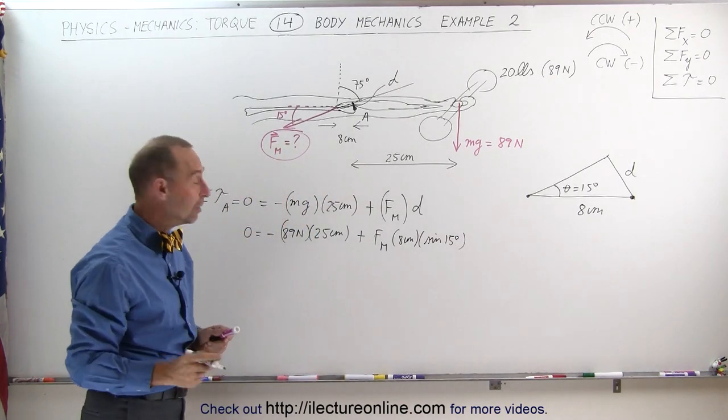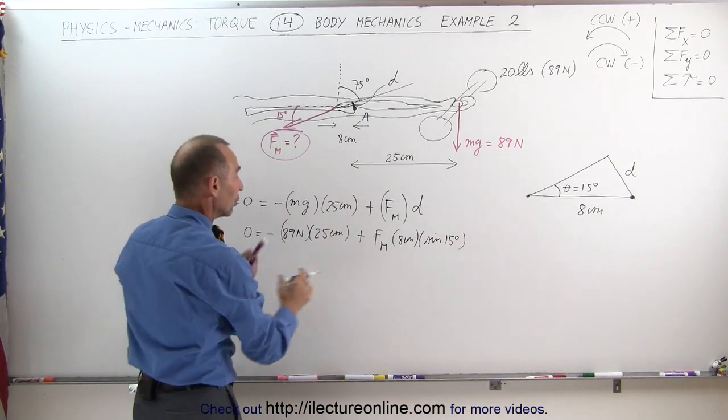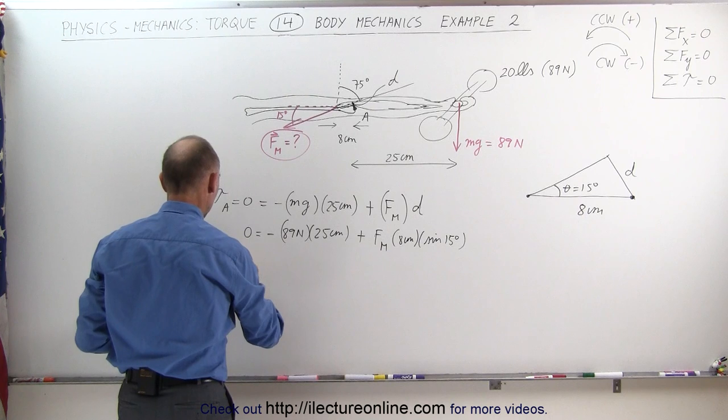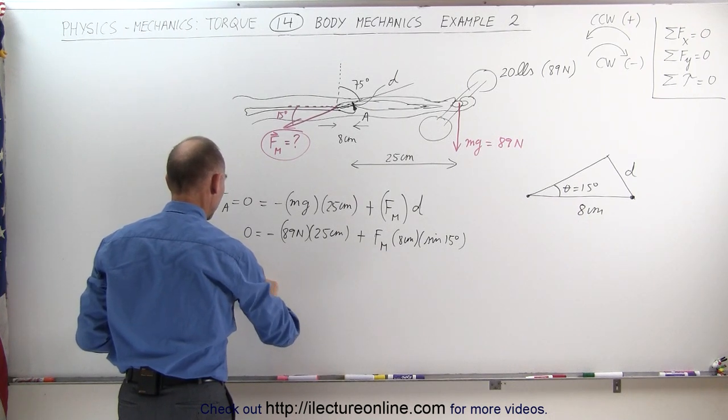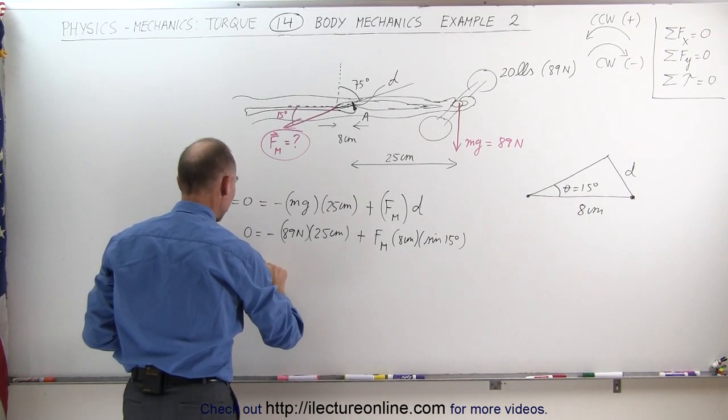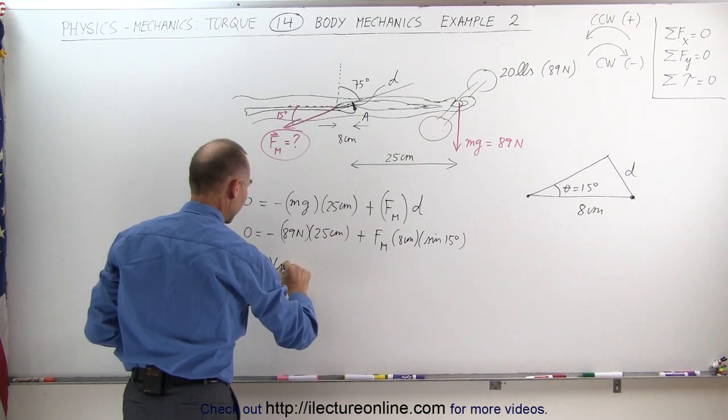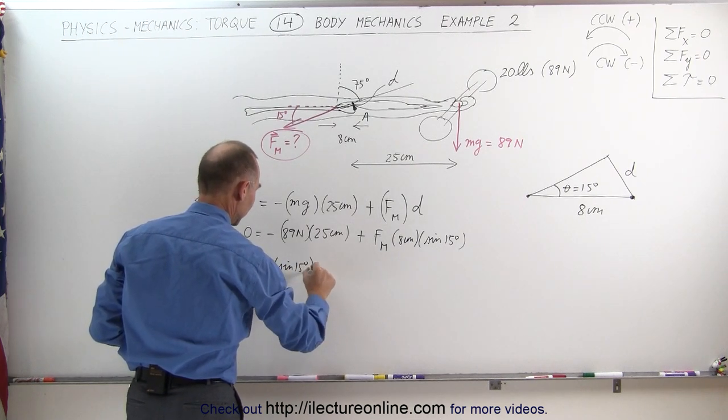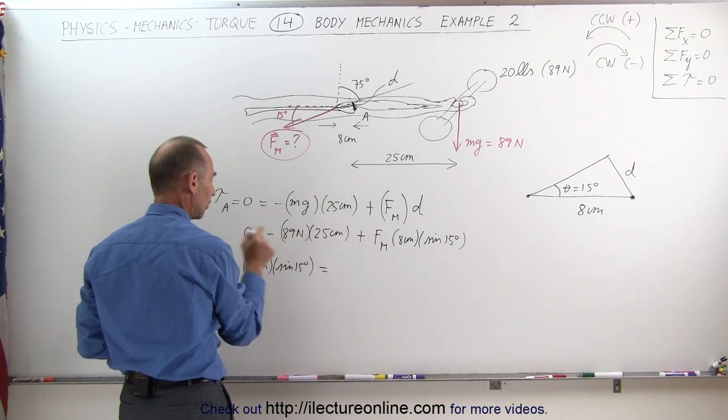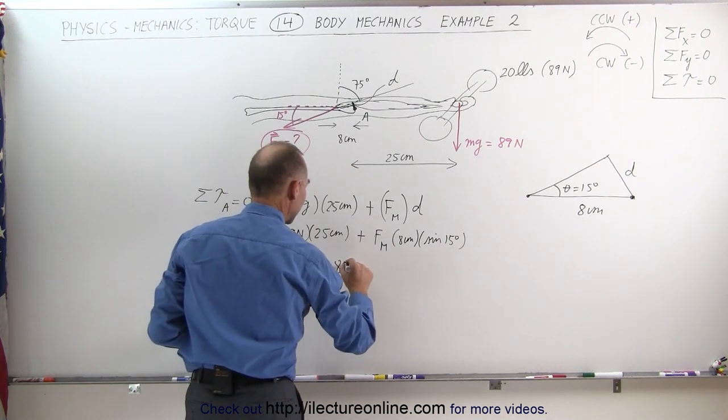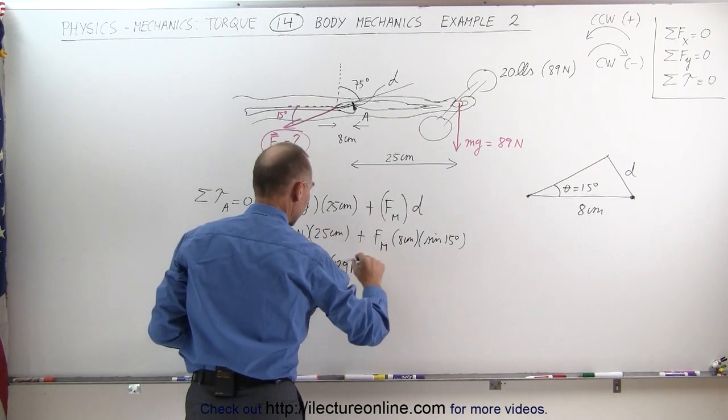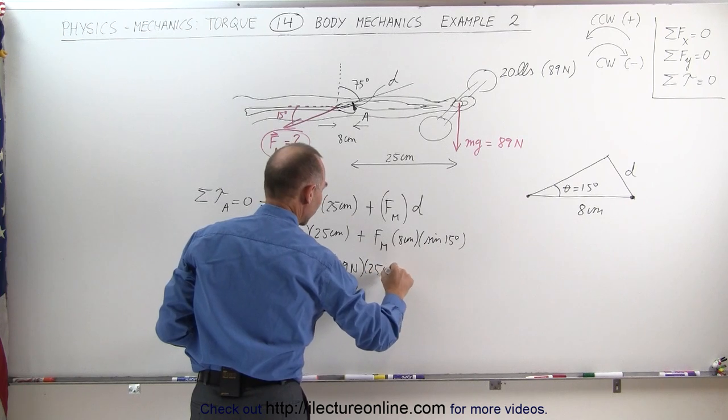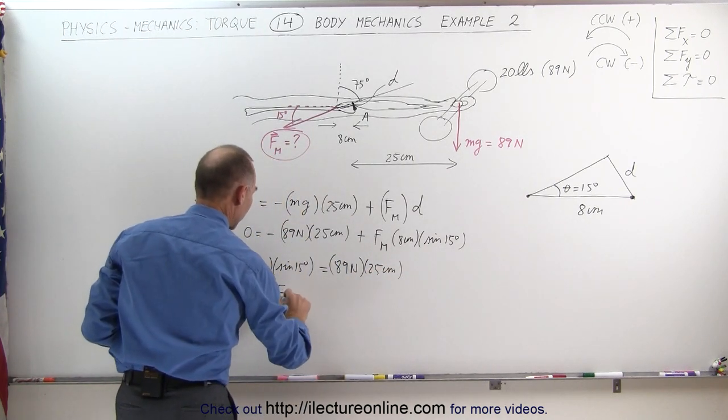When we move this to the other side and rearrange the equation, the force required by the muscle times 8 centimeters times the sine of 15 degrees equals 89 newtons times 25 centimeters.